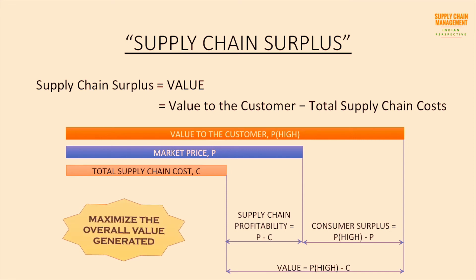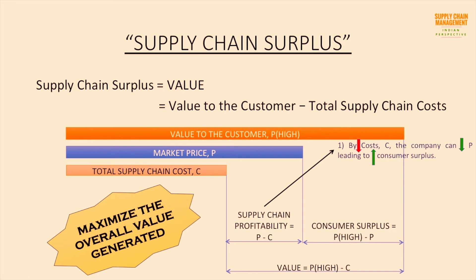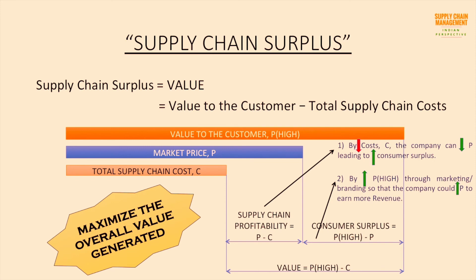To maximize the overall value generated, a company can decrease costs C so that it can decrease market price P. With a decreased price P, consumer surplus — which is PI minus P — increases, making customers more attracted to the product and hence increasing sales and overall profitability. Alternatively, a company can increase PI — the perceived value — through improved marketing and branding, allowing the company to increase market price P to increase profitability.